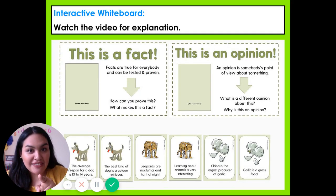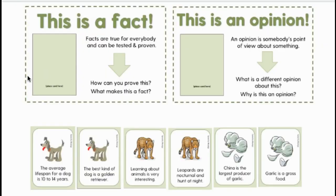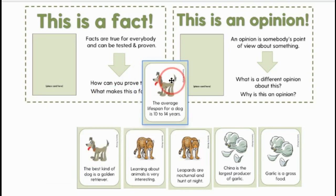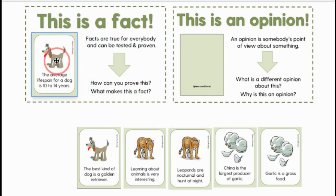Here we're going to do an activity. We have a whiteboard, just like if we were in the classroom. This side is a fact — facts are true for everyone and can be tested and proven. This side is an opinion — an opinion is somebody's point of view about anything. So here I have these cards. This one says: the average lifespan — meaning how long someone or something can live — for a dog is 10 to 14 years. Do you think this is a fact or an opinion? We're going to put it under fact. We can look at different dogs and see how long they live, and normally, if they're healthy, they will live 10 to 14 years. That's what makes it a fact, because it applies to all dogs.